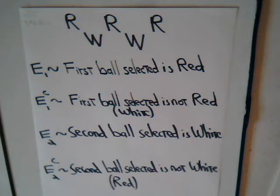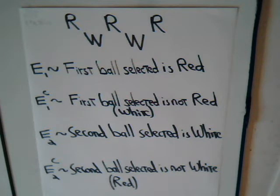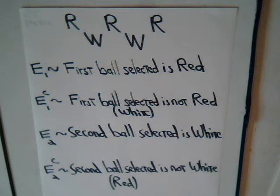So again, this container has five balls total — three of them are red, two of them are white. We randomly select a ball and suppose it's a red ball. What is the probability that on the second selection, when we go and remove a ball, that ball will be white?